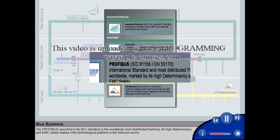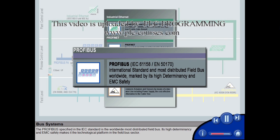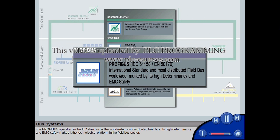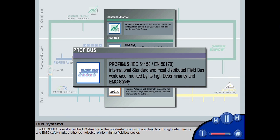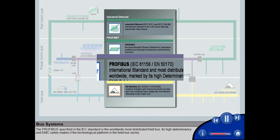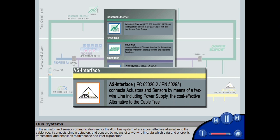The PROFIBUS, specified in the IEC standard, is the worldwide most distributed field bus. Its high determinancy and EMC safety makes it the technological platform in the field bus sector. In the actuator and sensor communication sector, the ASI bus system offers a cost-effective alternative to the cable tree. It connects simple actuators and sensors by means of a two-wire line, via which data and energy is transmitted, and simplifies maintenance and later expansions.